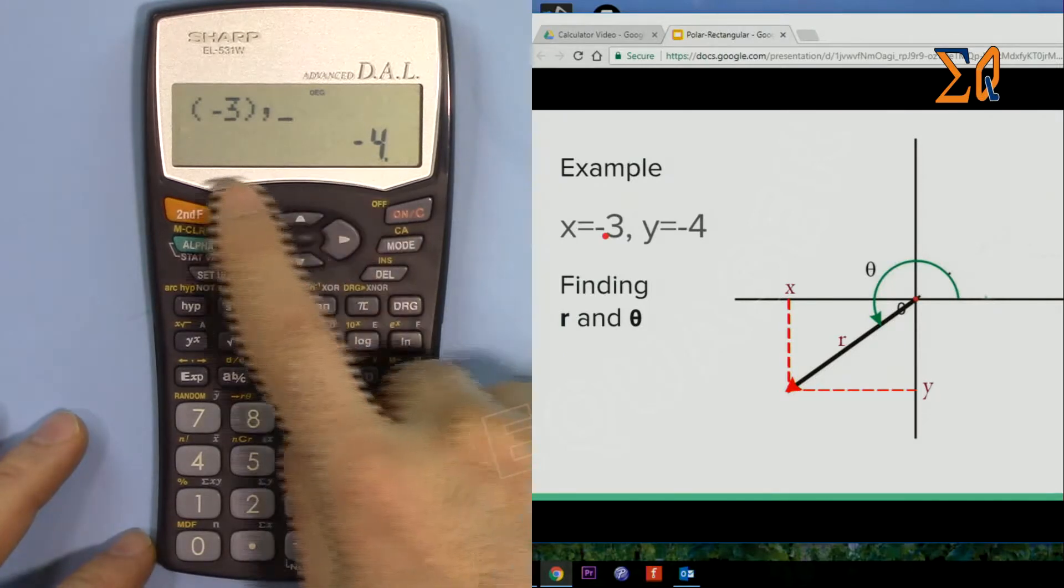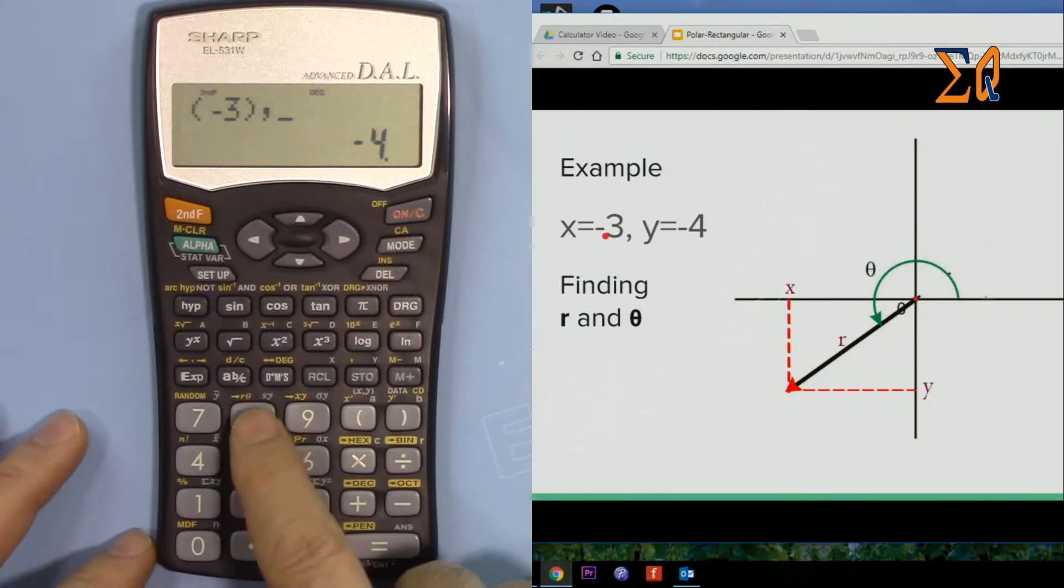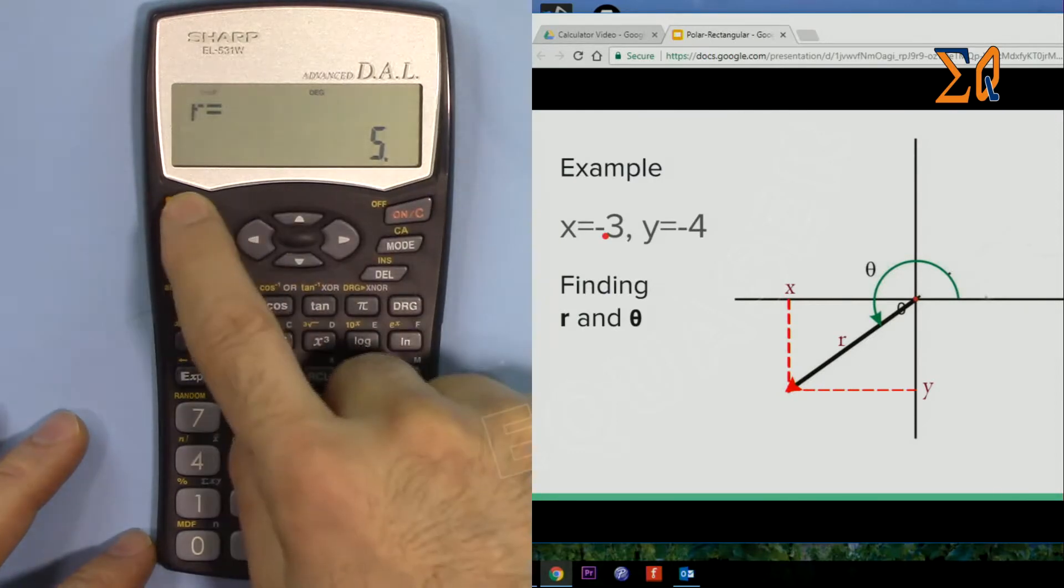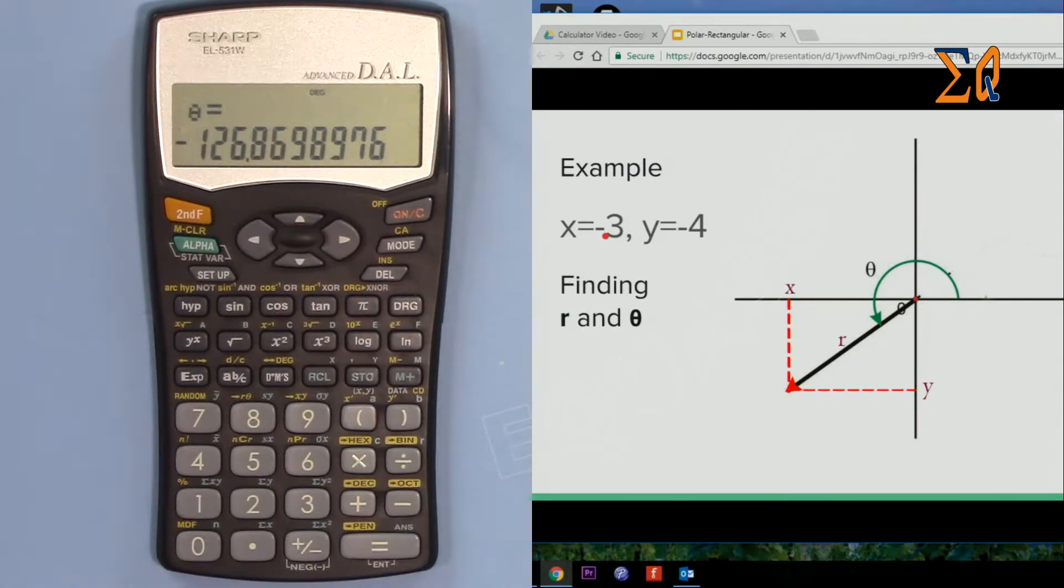And then now, second function r and theta, I'm pressing 8. So it gives r equals 5, and then second function EXP, theta is minus 126. So it means the angle has been calculated from this side because that's the shortest.